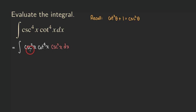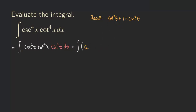Now we are going to replace this cosecant squared x using the identity: cosecant squared x equals cotangent squared plus one. The identity used theta, but for our problem the argument is x. So we replace that cosecant squared x with (cotangent squared x plus one), giving us that whole expression here.